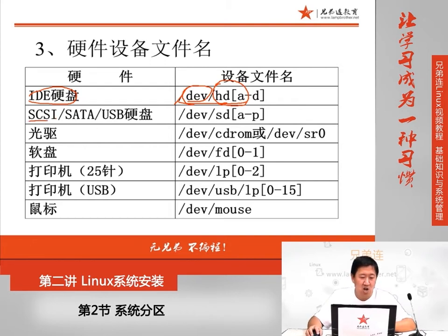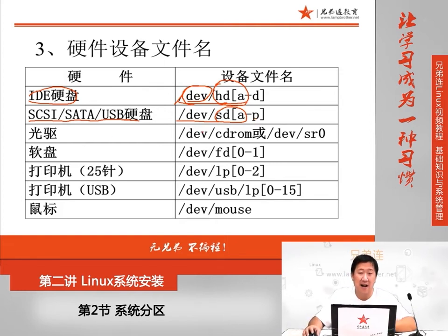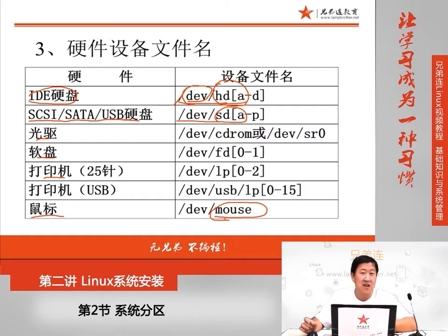如果是SCSI、SATA或者USB接口的硬盘，在Linux当中识别为/dev/sda到sdp。第一块硬盘是sda，第二块硬盘是sdb。除了硬盘，比如说光驱、软盘、键盘、鼠标，在dev下都有它相应的硬件文件名。